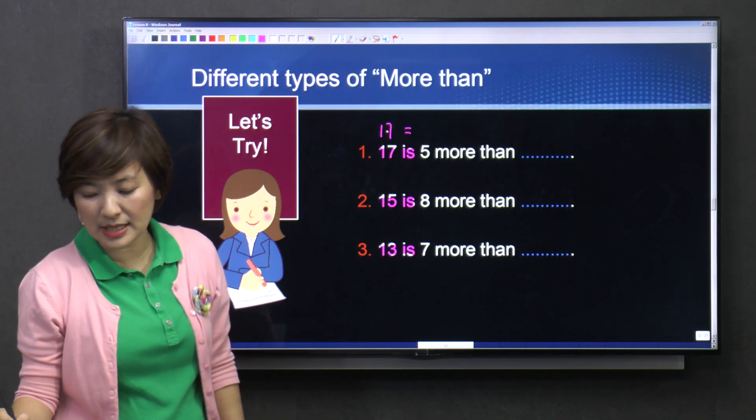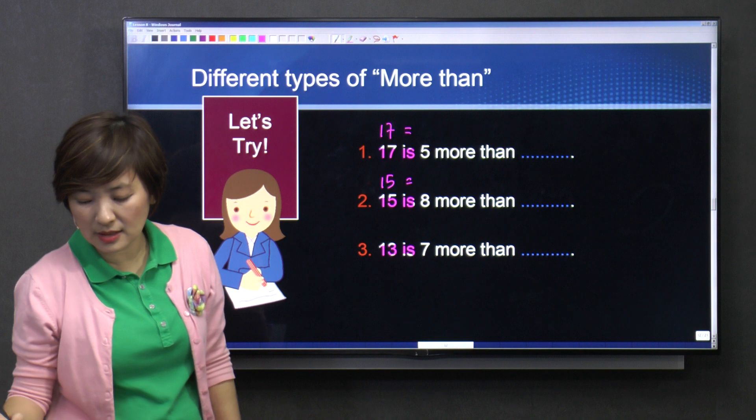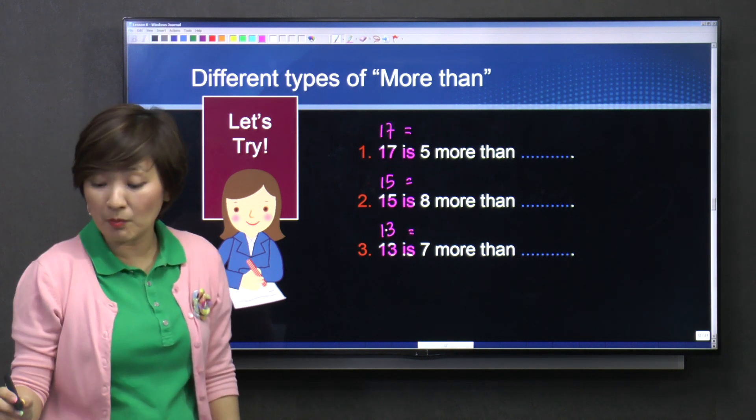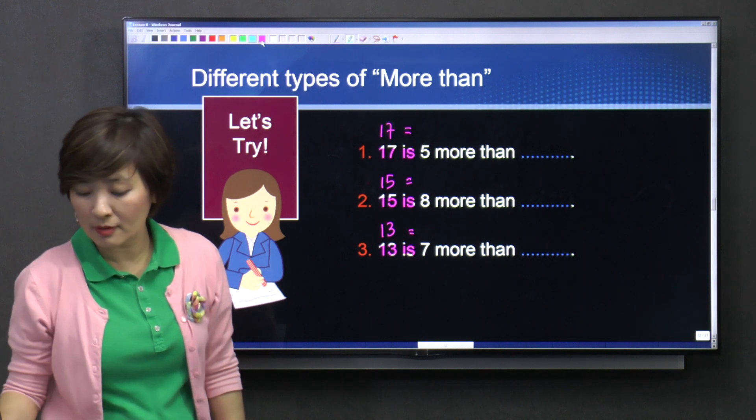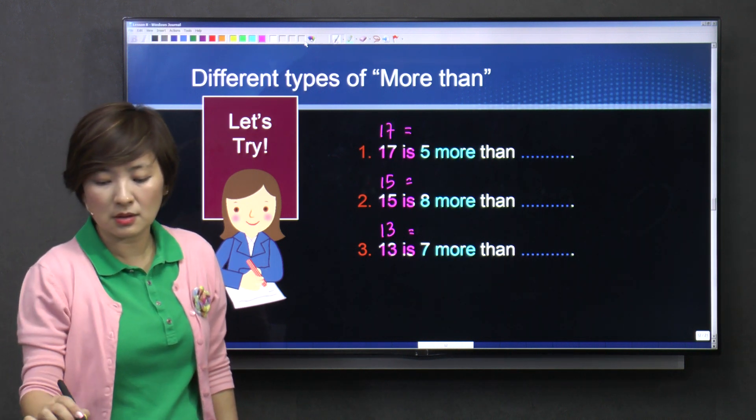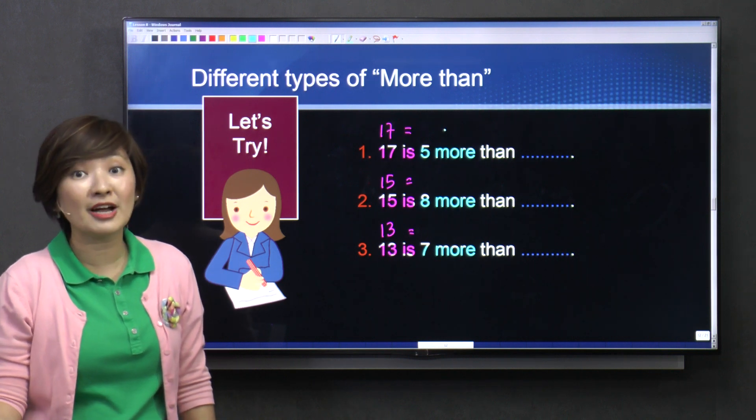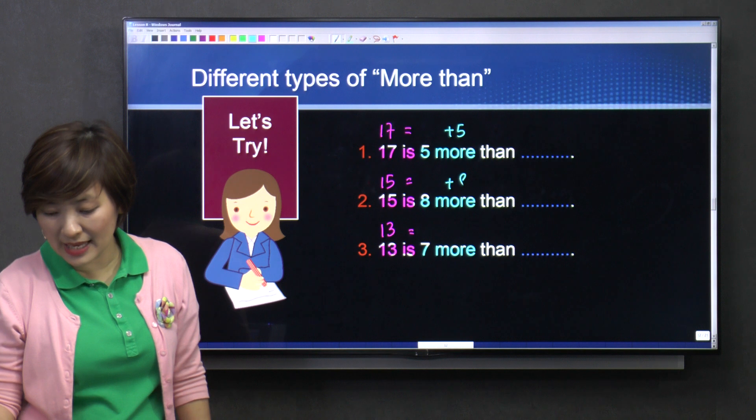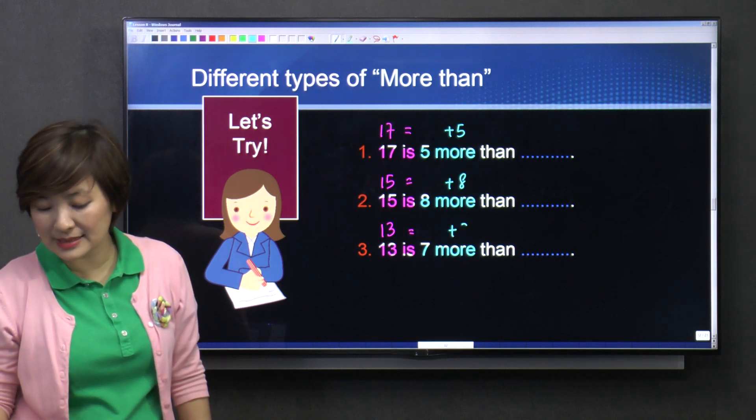Tells me equals to something. Okay? All right? Equals to seventeen, equals to fifteen, equals to thirteen. All right? Then I have more than five more, eight more, seven more. So I'll have five more is plus five, eight more is plus eight, seven more is plus seven.